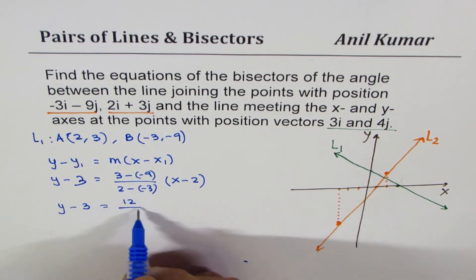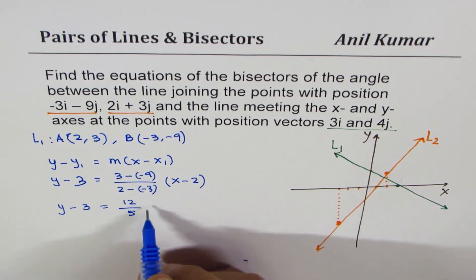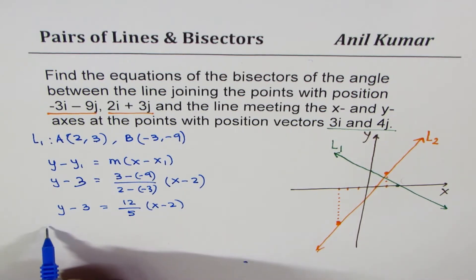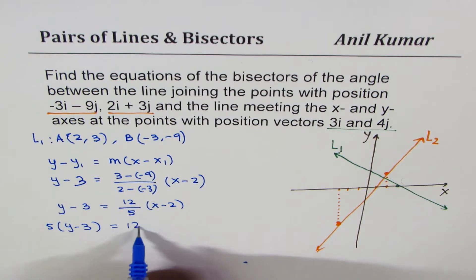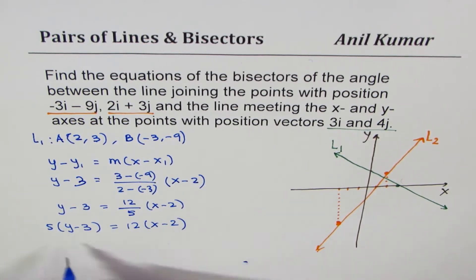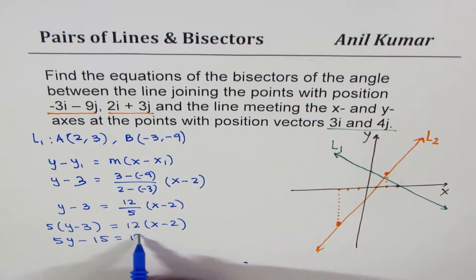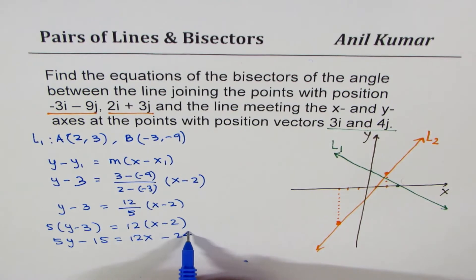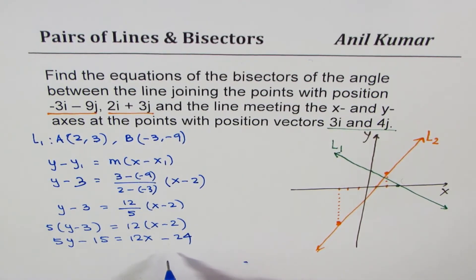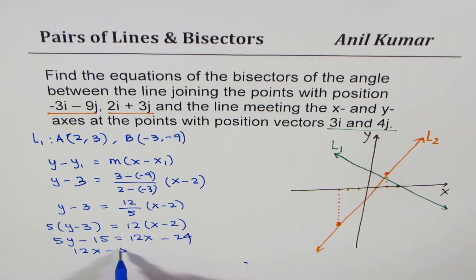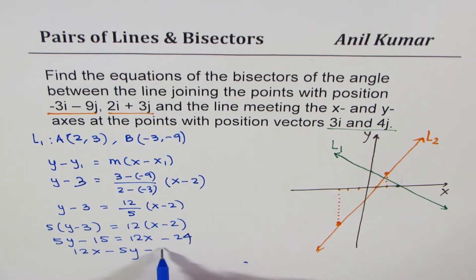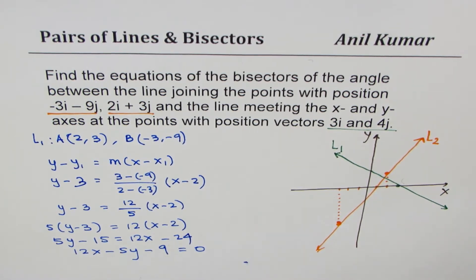Cross-multiplying gives 5(y minus 3) equals 12(x minus 2), which expands to 5y minus 15 equals 12x minus 24. Writing this in standard form: 12x minus 5y, and bringing 15 to the right gives minus 24 plus 15, which is minus 9. So the first equation is 12x minus 5y minus 9 equals 0.